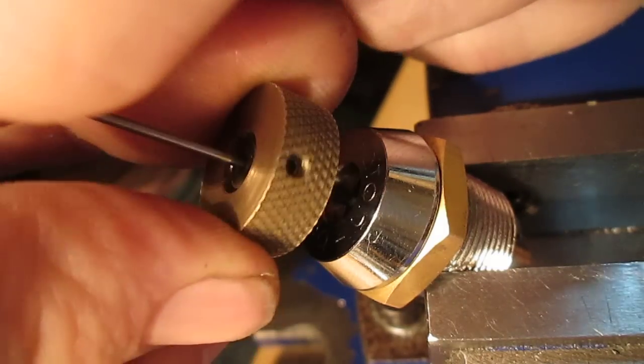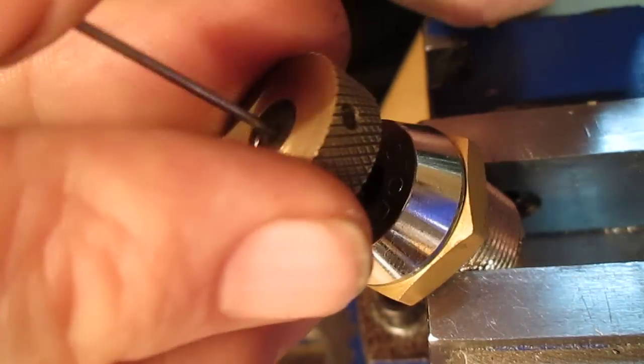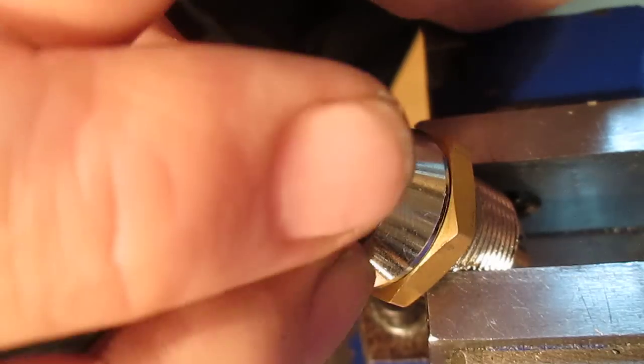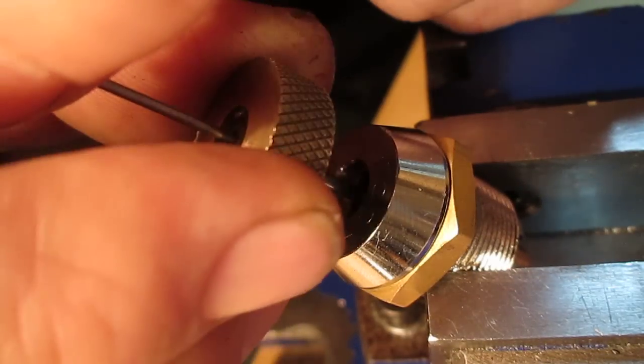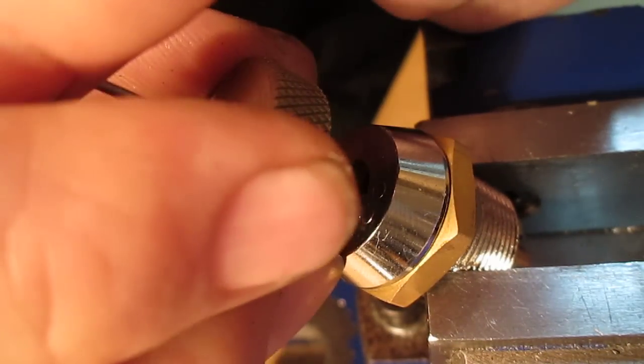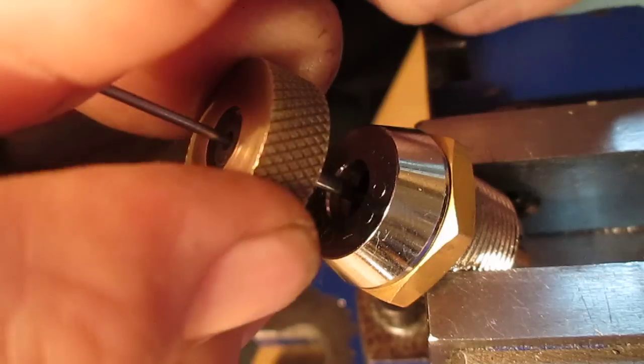So what I'm going to do here is tension the lock, and I'm just going to go through the pack, feeling for binding discs. And if I don't feel it binding, I'm just going to park it around at the zero position.